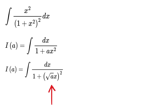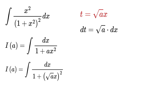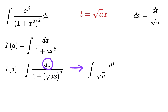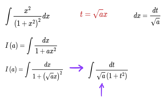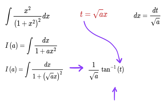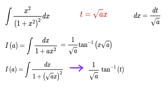We can also write this as 1 over (square root of a times x) whole squared. Consider t equals square root of a times x, therefore dt equals square root of a times dx, or dx equals dt over root a. Substituting both, dx becomes dt over root a and the denominator becomes simply 1 plus t squared. Since root a is constant, take it outside the integral to get 1 over root a times the integral of 1 over 1 plus t squared, which is none other than tangent inverse of t. Substituting t back, we get I of a equals 1 over root a times tan inverse of x times square root of a.